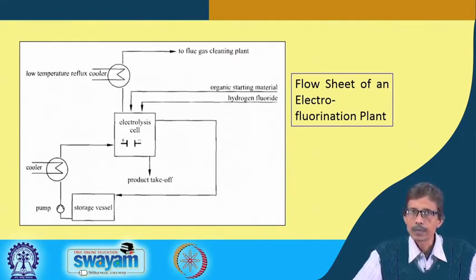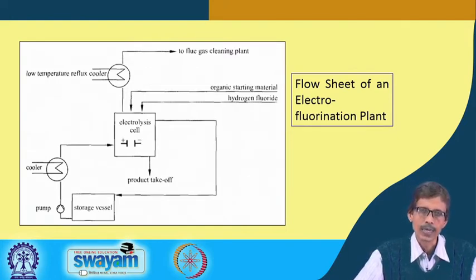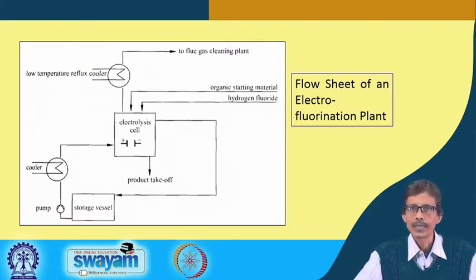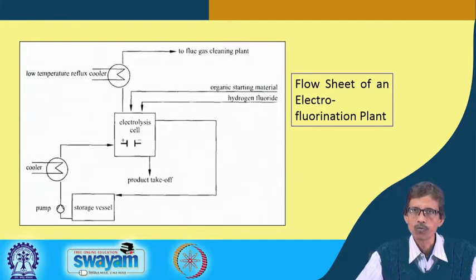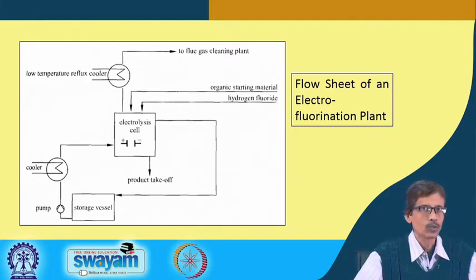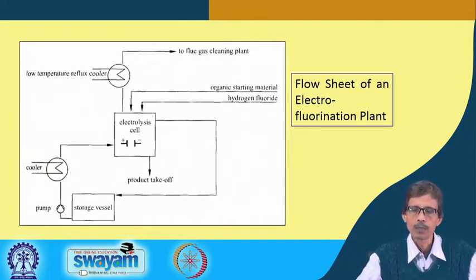Try to remember the flow sheet diagram, because otherwise it is difficult to understand what reaction is happening. If a flow diagram is given with something drastically wrong, you should be able to identify which part is incorrect for this particular plant.